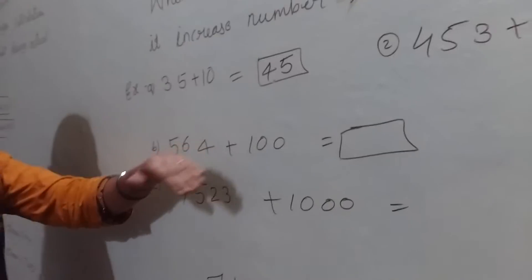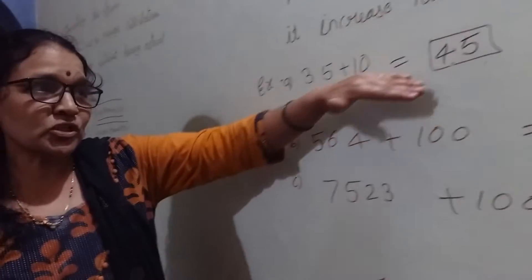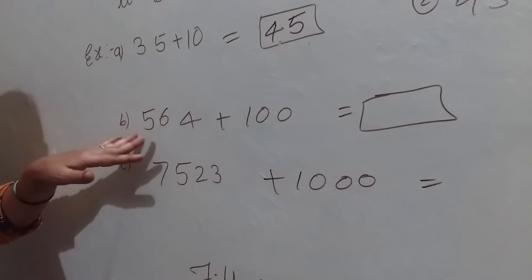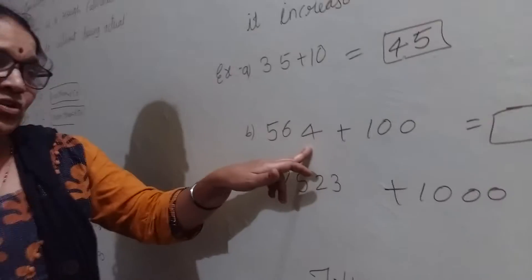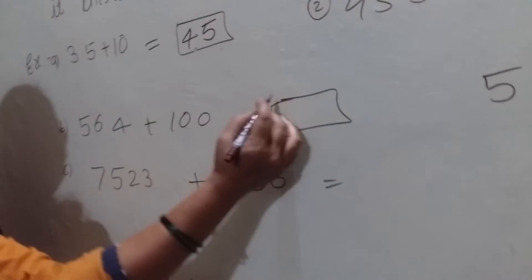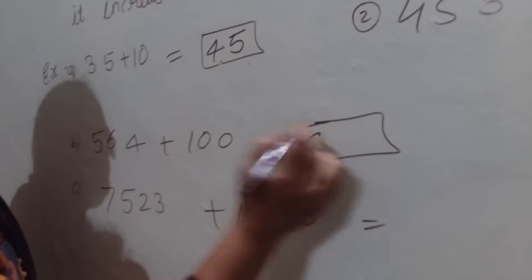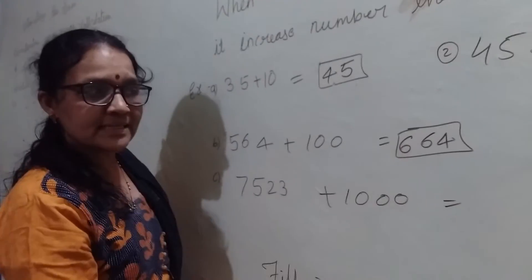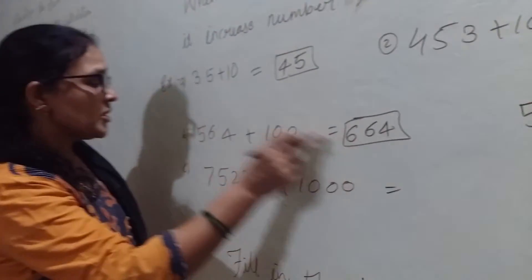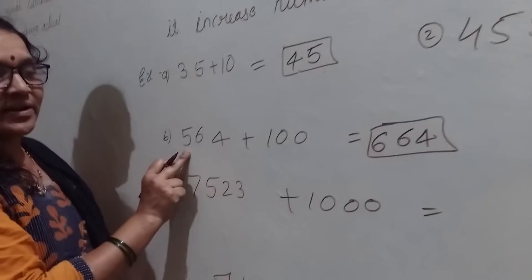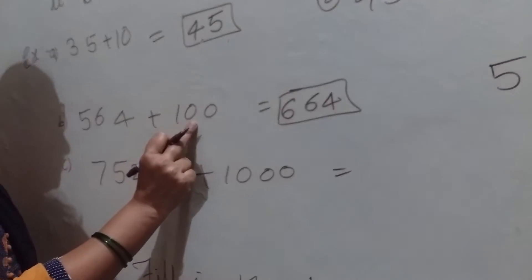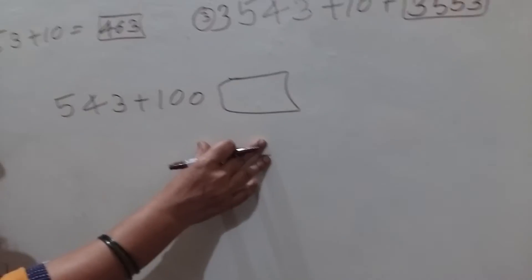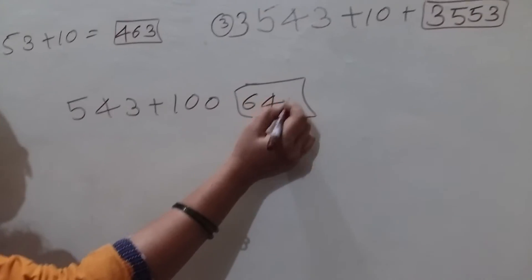One more example. Here you change the tens place. Now, for the next one, you have to change only the hundreds place. 564 plus 100 means the tens place stays as it is, the ones place stays as it is. Only the hundreds digit changes. 564 becomes 664. Now 543 plus 100 — what answer will come? 643.